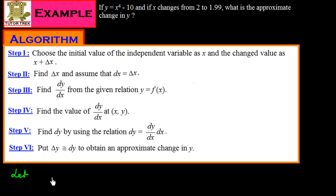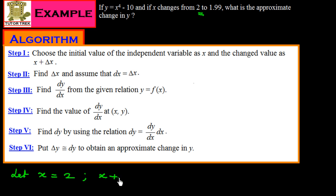Let x = 2, since the initial value is 2. The changed value x + δx = 1.99. We need to find δx, and we assume dx = δx for step 2.